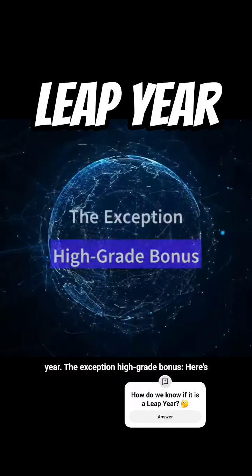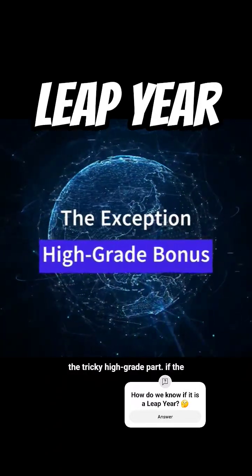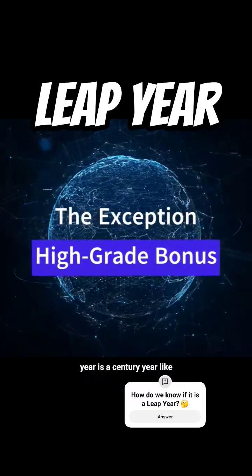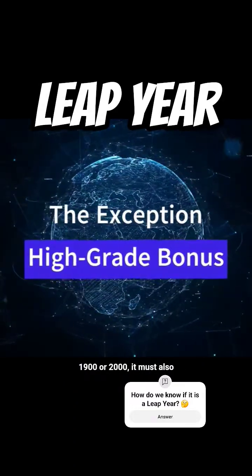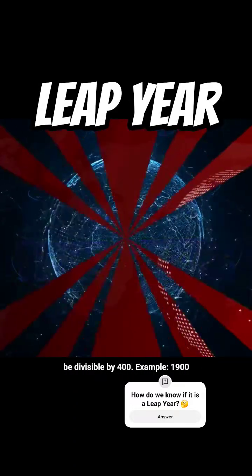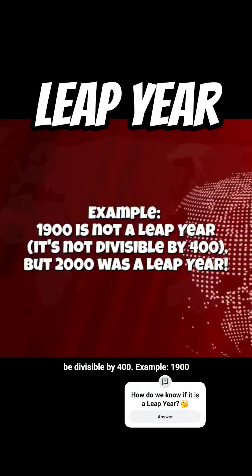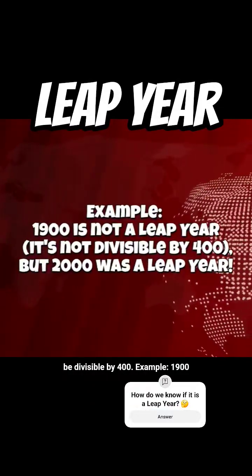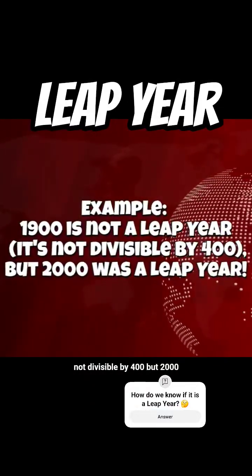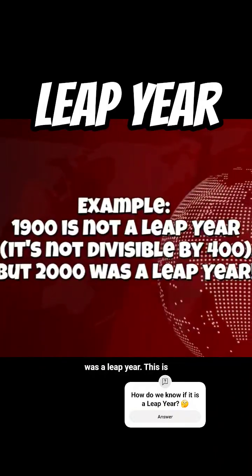The exception — here's the tricky part. If the year is a century year, like 1900 or 2000, it must also be divisible by 400. Example: 1900 is not a leap year because it's not divisible by 400, but 2000 was a leap year.